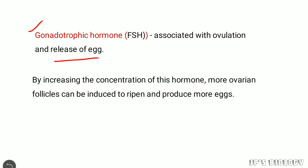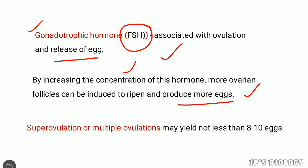This ovulation is associated with the release of egg. By increasing the concentration of this hormone, more ovarian follicles can be induced to ripen and produce more eggs. So super ovulation, or multiple ovulation, may yield not less than 8 to 10 eggs.